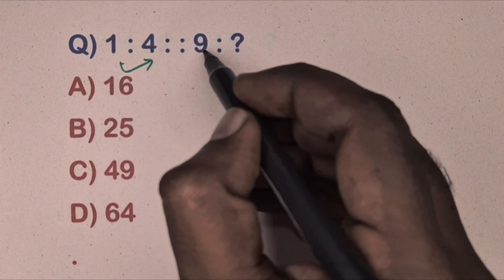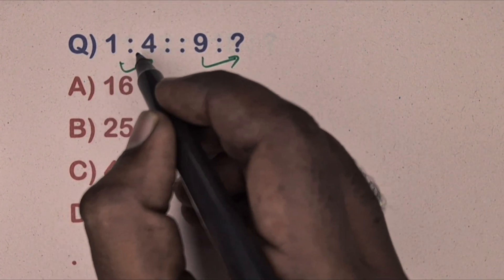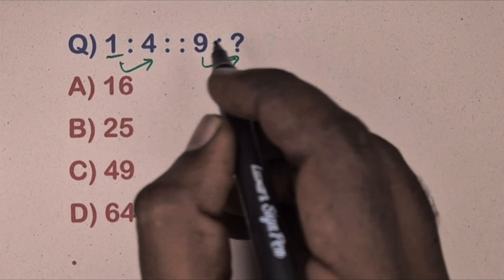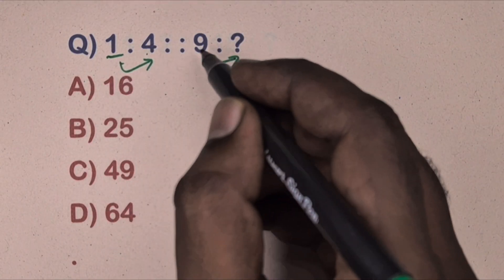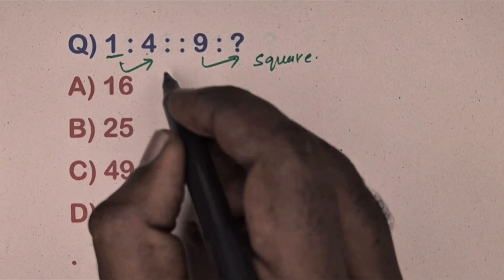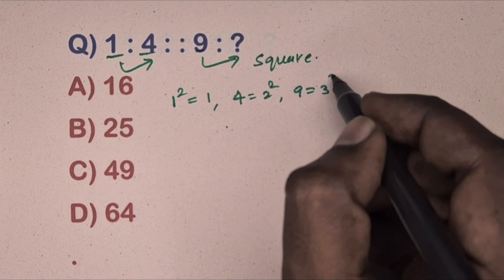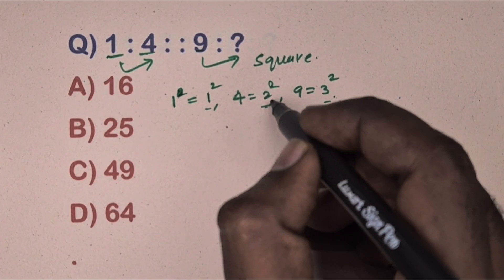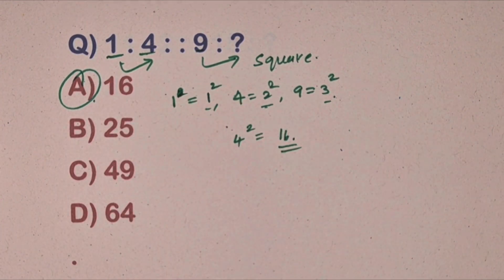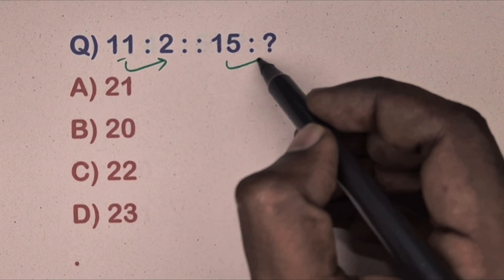Next question: one is related to four, nine is related to which number. Options are given. Looking at the numbers one, four, nine — these are squares. This is the square of numbers relation. The sequence is one squared, two squared, three squared, so the next number is four squared equals 16. Option J is the correct answer.